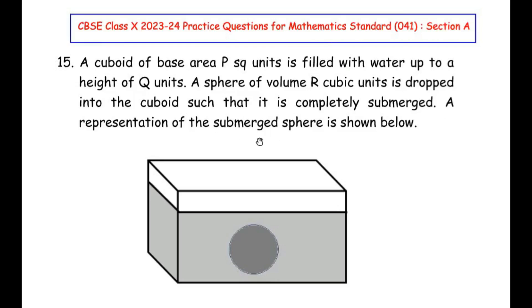This question is from surface area and volume chapter. A cuboid of base area P square units is filled with water up to height of Q units. A sphere of volume R cubic units is dropped into the cuboid such that it is completely submerged. A representation of the submerged sphere is shown below.